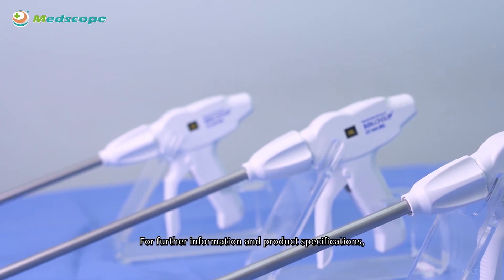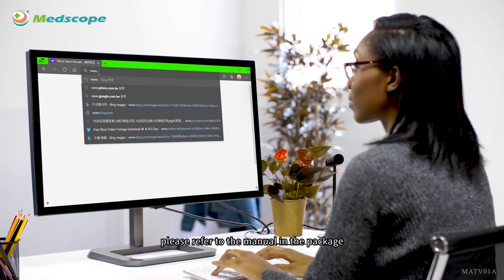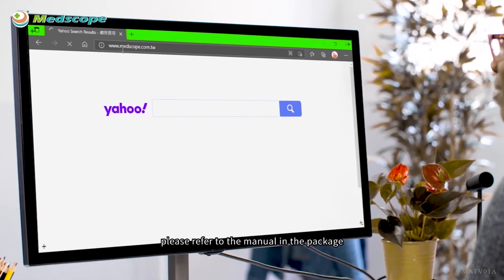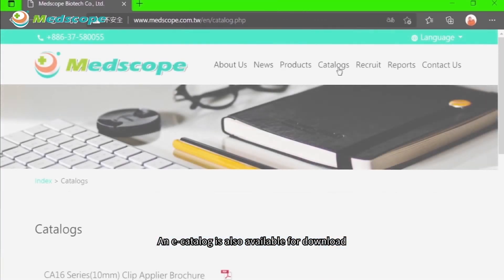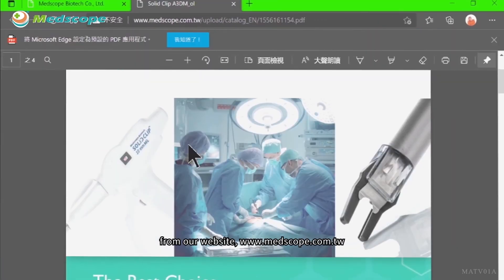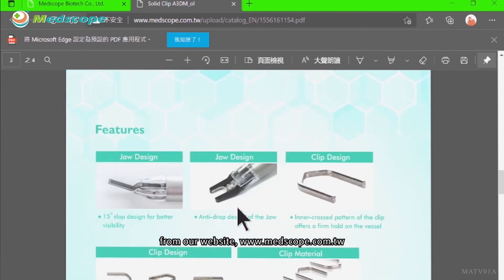For further information and product specifications, please refer to the manual in the package. An e-catalogue is also available for download from our website www.medscope.com.tw.